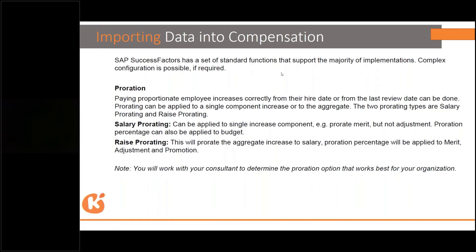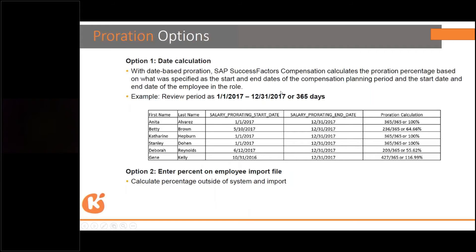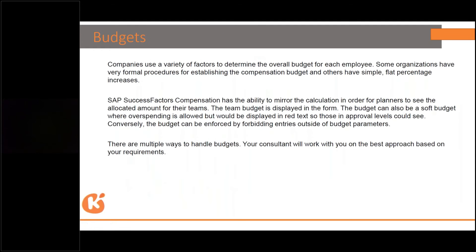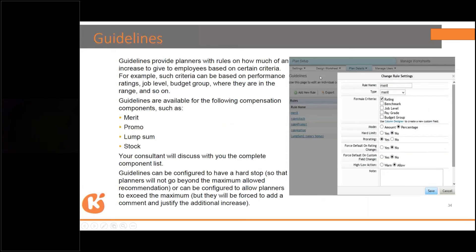This slide shows the prorata type and how the calculation happens — we'll discuss this in detail during the session. There's also a benchmark for salary, and we'll discuss comp ratio and range penetration. Then there's the budget section — you can decide how much budget is allocated, for example, six percent or ten percent, and define it accordingly.